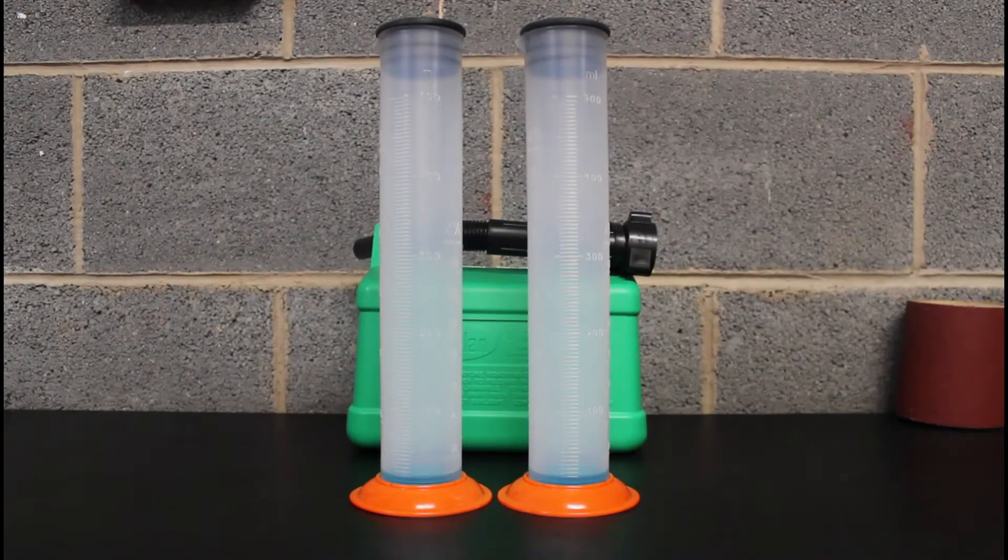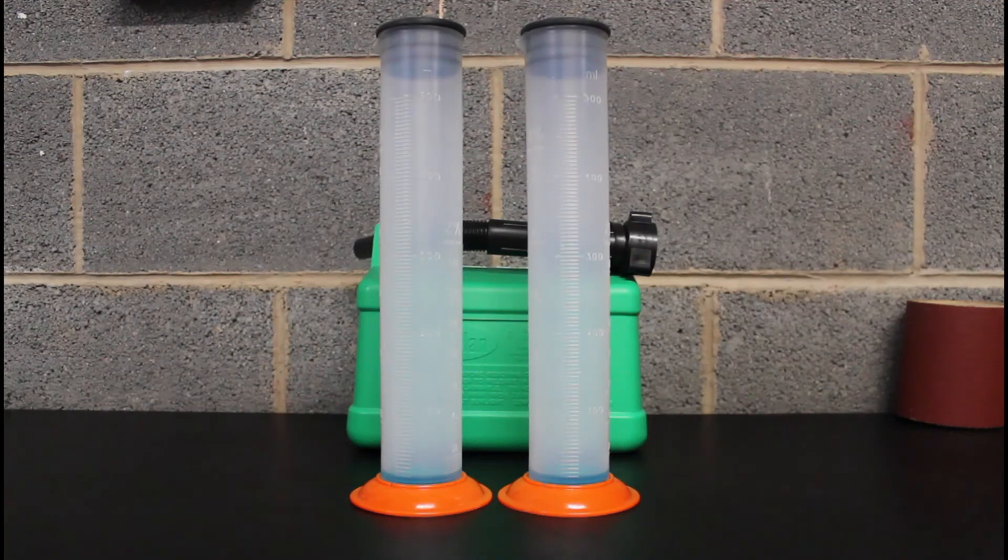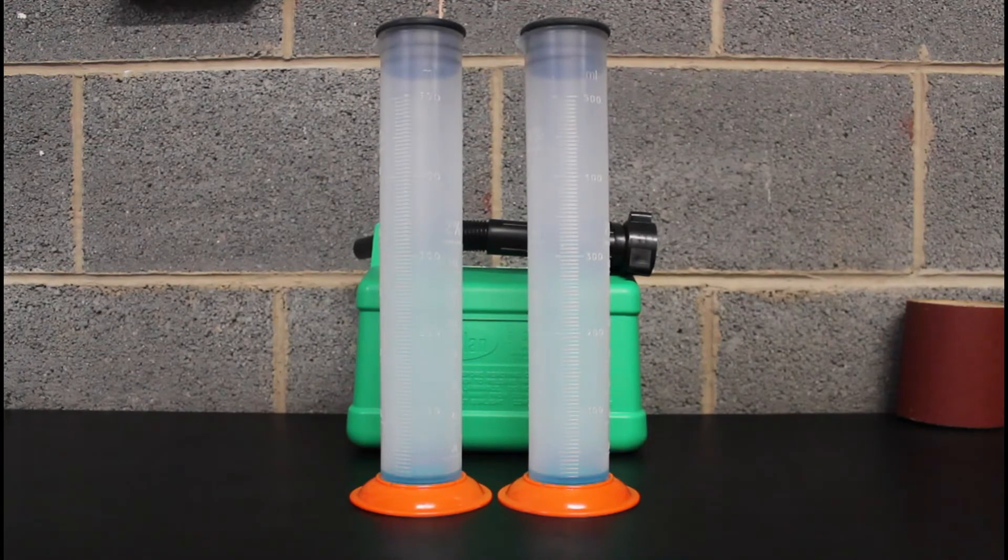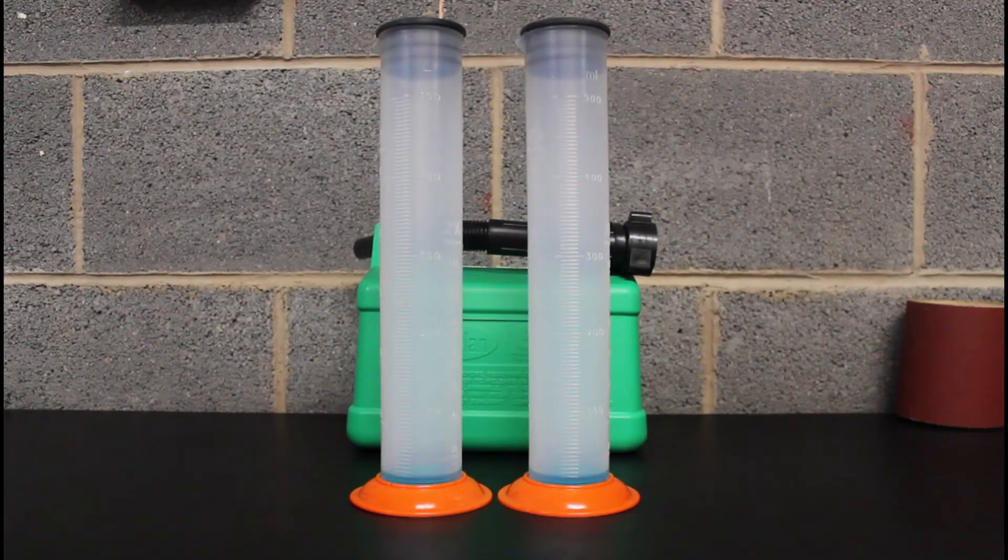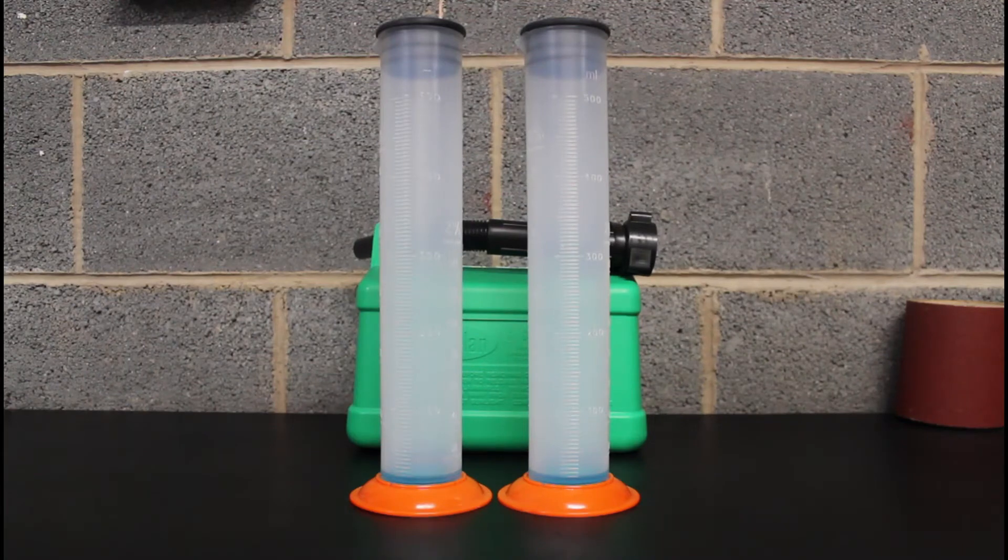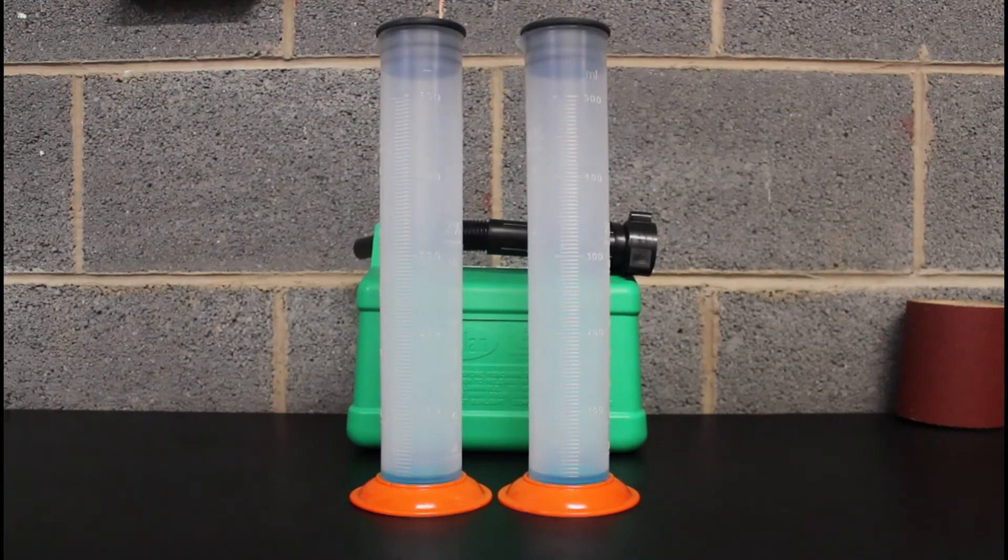Right then guys, we're back again and today we're going to test Sainsbury's fuel. Sainsbury's standard E10 will be on the left, super unleaded on the right. There's 20 milliliters at the bottom of dyed blue water. We're going to add 200 milliliters of fuel into each one, so that'll be a 10% ratio.